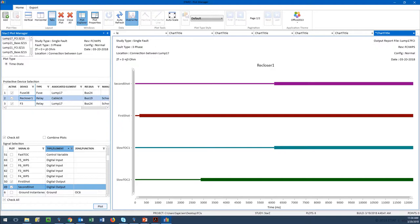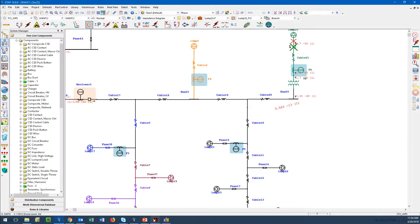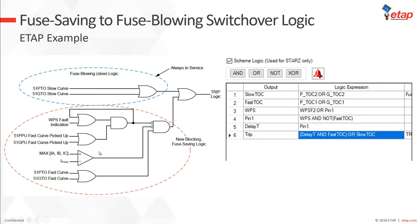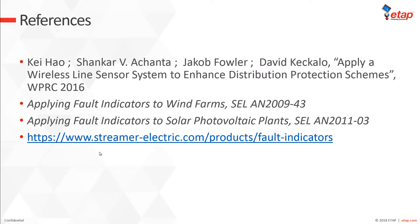That would be the end of today's session. It was a quick webinar on faulted circuit indicators and how you can use them in ETAP. One reference used for preparation is a paper by Schweitzer Engineers presented at WPRC 2016, and there is other material available online. Thank you for listening, and if you have any questions, please let us know.